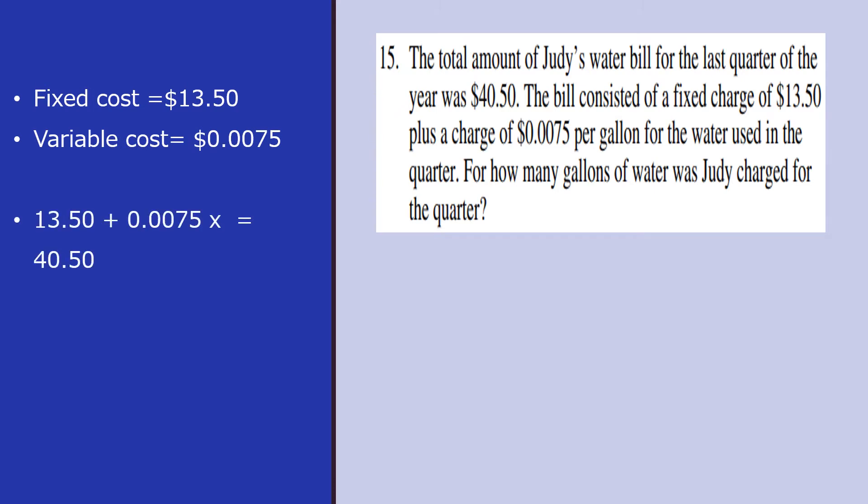If X represents the number of gallons utilized, then 13.50 which is the initial fixed cost plus the amount for the X gallons of water will be X times 0.0075. That must be the total $40.50. So you can solve for X and your X is 3,600. So your answer is 3,600 gallons of water.